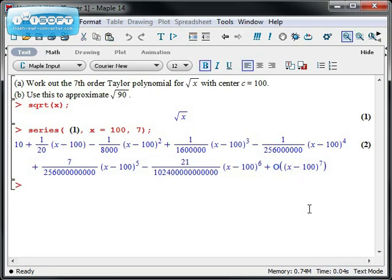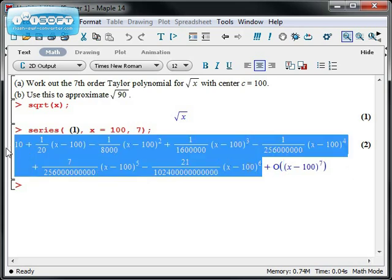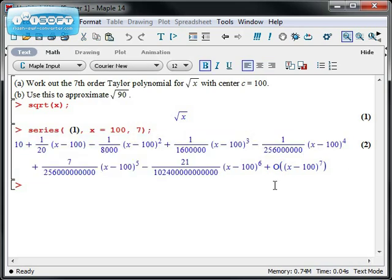But then I get this giant O right here, that's not the number 0, that's just the letter O. And what the O means is it means order. In other words, it's saying all of the other terms have at least an x minus 100 to the 7th in there. So this part right here represents the 6th order Taylor polynomial, not the 7th order.